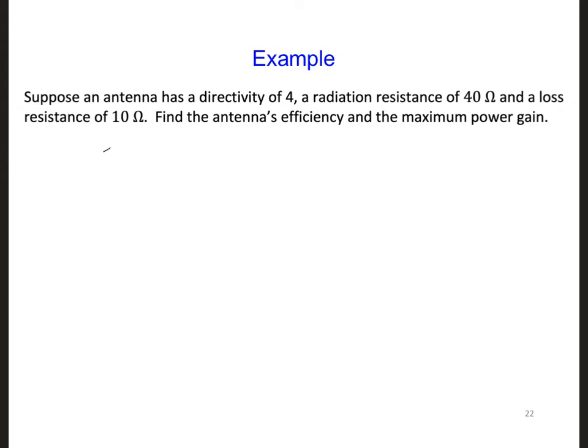Well, the efficiency is R radiated over R radiated plus R loss. So we need to identify that this is R radiated. So we'd have 40 over 40 plus the loss resistance R loss, so plus 10, and that is 0.8. Or the antenna is 80% efficient.